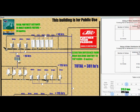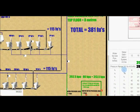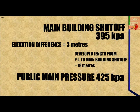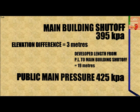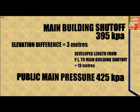Our first two steps will repeat the previous animations: size the water service outside of the building, then size the water distribution entry pipe inside the building. The first step is to find the pressure in kPa at the public main, which in this case is 425 kPa. Then find the elevation difference between the public main and the main building shutoff, which is 3 meters. We multiply 3 meters times 10 kPa for a difference of 30 kPa.